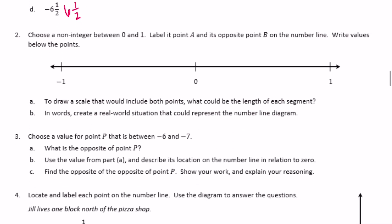Number 2: choose a non-integer between 0 and 1. Label it point A and its opposite, point B, on the number line, and write values below the points. I'm going to choose 1 fourth, so I'll separate the number line into fourths. Here's 1 fourth — I'll label it A. The opposite of 1 fourth is negative 1 fourth, so I'll label that point B.